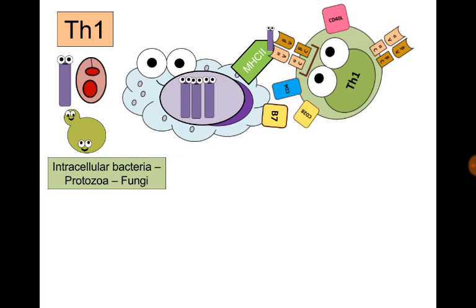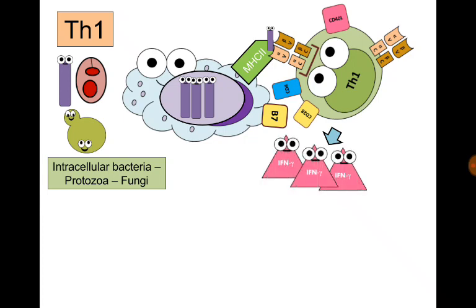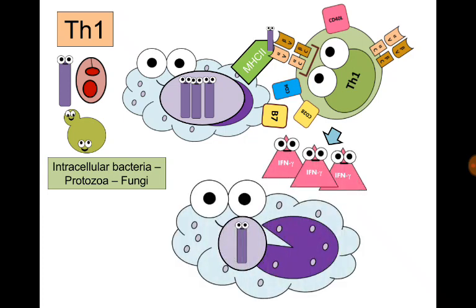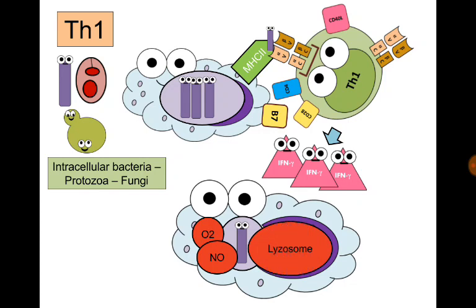A specific T-helper 1 cell then attaches to this MHC-antigen complex through the T-cell receptor. The T-helper 1 cell becomes activated and secretes interferon gamma. Interferon gamma helps the macrophage get rid of the pathogen inside it by stimulating the macrophage to produce reactive oxygen radicals and nitric oxide, both of which are lethal to organisms, and by helping fusion between the phagosome — where the organism lives — and the lysosome, a bag of digesting enzymes that destroy the organisms.